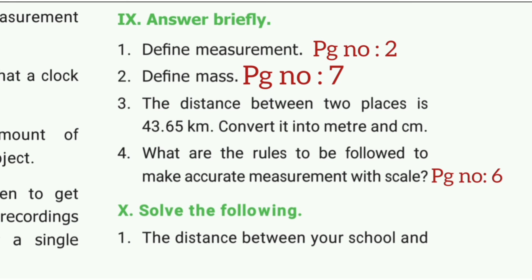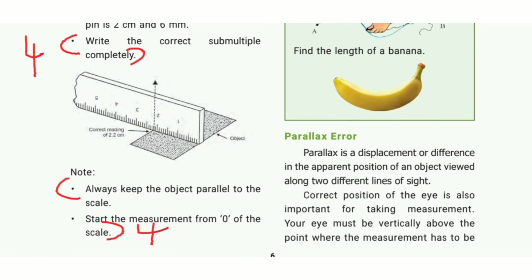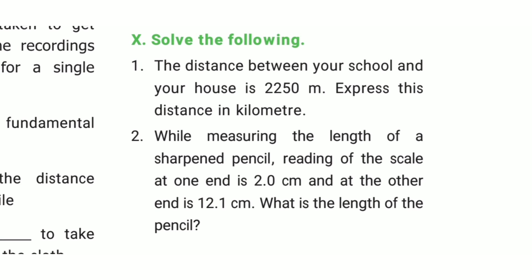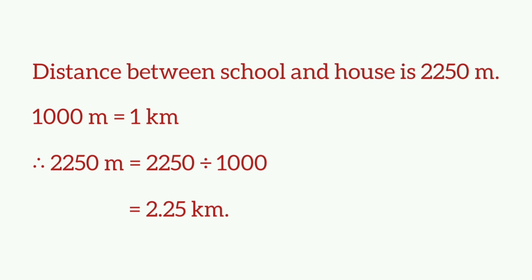Fourth question: What are the rules to be followed to make accurate measurements with a scale? Refer to page number 6. Always keep the object parallel to the scale. Start the measurement from zero of the scale. Solve the following: First one — the distance between your school and your house is 2250 meters. Express this in kilometers. 2250 ÷ 1000 = 2.25 kilometers.